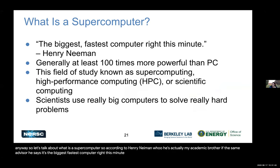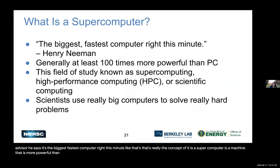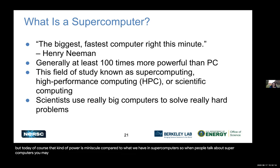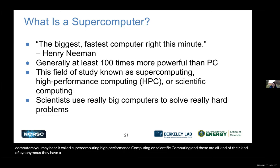According to Henry Neiman — my academic brother, we have the same advisor — a supercomputer is the biggest, fastest computer right this minute. A supercomputer is a machine more powerful than other machines at that time. If you went back to the 1990s with your phone, it would be a supercomputer. When people talk about supercomputers, you may hear it called supercomputing, high performance computing, or scientific computing — those are kind of synonymous terms. Basically, scientists or engineers use these big supercomputers to solve really hard problems — doing simulations, data analysis, and so on.